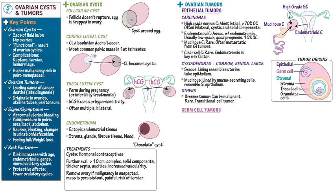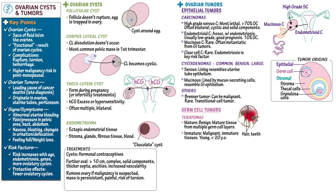Key germ cell tumors include teratomas. Mature teratomas, formerly called dermoid cysts, are generally benign and comprise mature tissue from multiple germ cell layers, including hair, teeth, and other tissues. Immature teratomas are very rare but malignant, comprising immature tissues and are more commonly found in patients under 20 years old. Tumor markers include elevated lactate dehydrogenase. Dysgerminomas are malignant, primitive germ cell tumors with variable histological patterns, most commonly found in children and young women, with elevated LDH as a tumor marker.